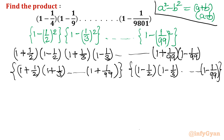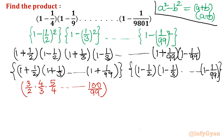The first bracket becomes (3/2)(4/3)(5/4)···(100/99), and the second bracket becomes (1/2)(2/3)(3/4)···(98/99). In the first bracket, numerators and denominators cancel telescopically — 3 cancels, 4 cancels, and so on up to 99 — leaving 100 over 2. In the second bracket, 2 cancels, 3 cancels, similarly up to 98, leaving 1 over 99.